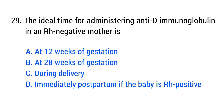Question number 29. The ideal time for administering anti-D immunoglobulin to an Rh-negative mother is? The right answer is option B, at 28 weeks of gestation.